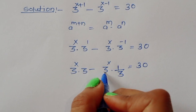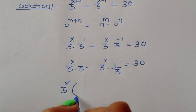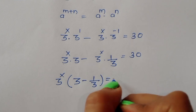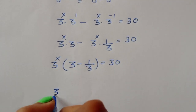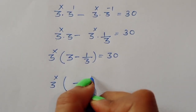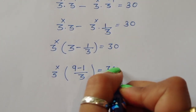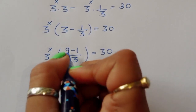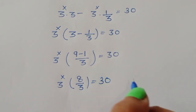Now we take 3^x as a common factor. After factoring out 3^x, it becomes 3^x times (3 minus 1/3) equals 30. Simplifying inside the bracket: 3^x times (9 minus 1)/3, which is 3^x times 8/3, equals 30.